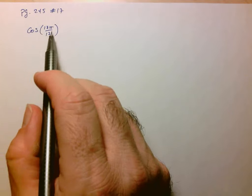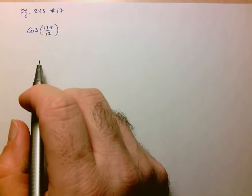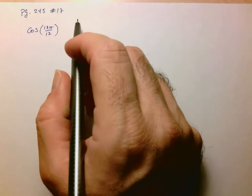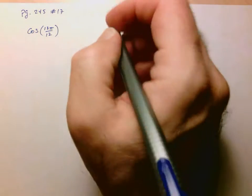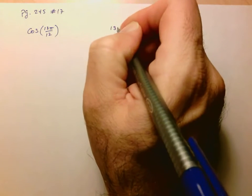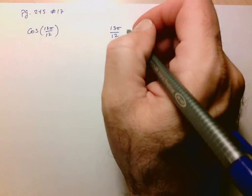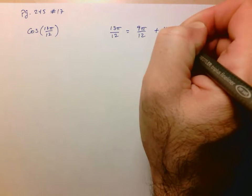So since this is not a special angle, I'm going to have to try to write it as a combination of special angles. So again, think of your special angles as fractions over 12. There's probably lots of ways in which you can combine them to get 13π over 12. The one that comes to mind is 9π over 12 plus 4π over 12.